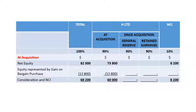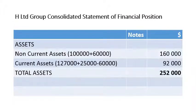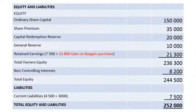There is no goodwill in Scenario 2 — instead there is a gain. For the consolidated statement of financial position, assets are added (H plus S); current assets are H Limited's $127,000 plus S Limited's $25,000, less $60,000 cash used for the acquisition. In equity and liabilities, retained earnings includes the $13,800 gain made on acquiring S Limited, which belongs only to the parent. NCI is still $8,200. Liabilities are added the same way as in Scenario 1.